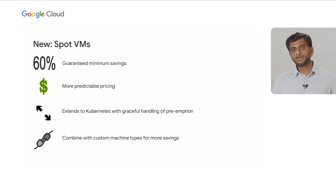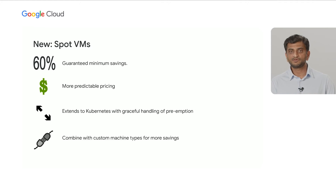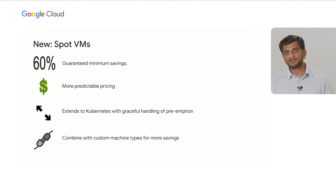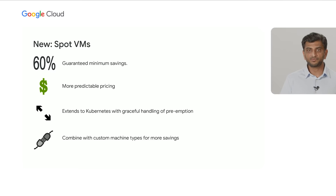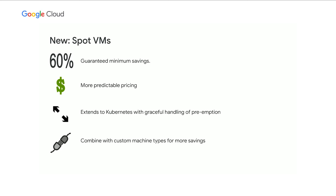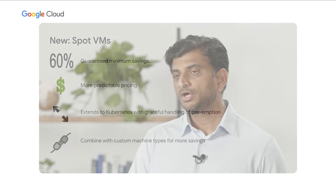Kubernetes Engine also supports Spot VMs, so you can take advantage of the price point from your Kubernetes clusters, and we've ensured that preemption, when it does happen, is very graceful. Lastly, you can combine this price benefit with custom machine types, which allow you to pick the exact number of cores and memory so that you don't have any waste often caused by predefined machine sizes.